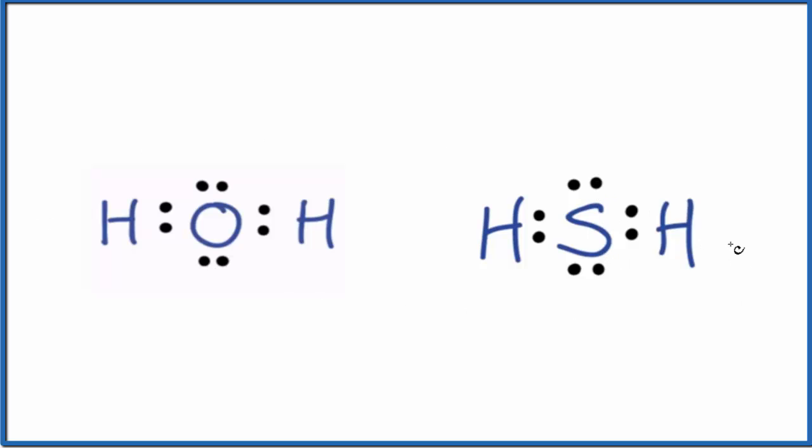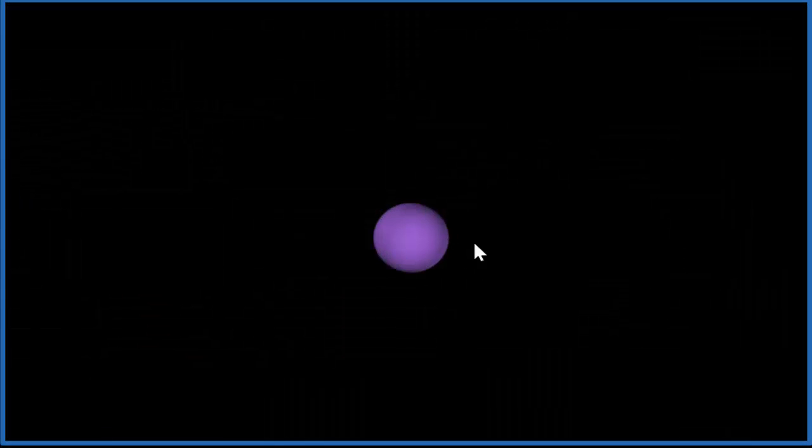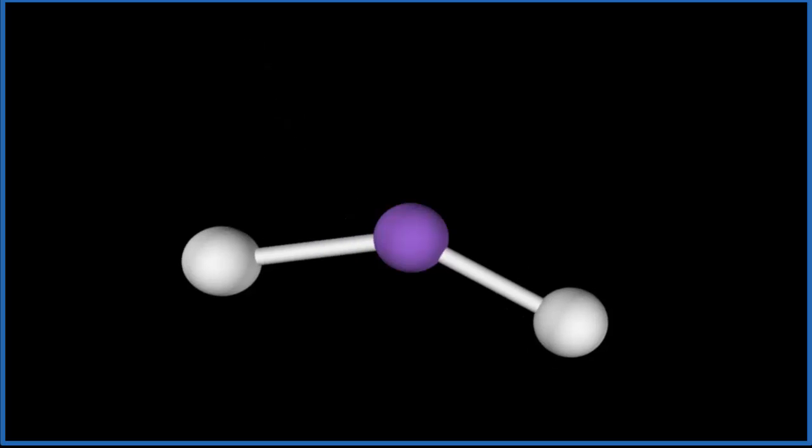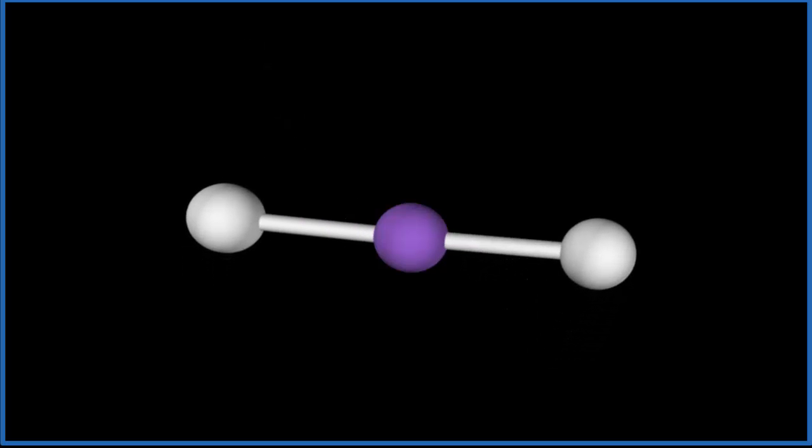So we have the same Lewis structure, that means we'll have the same molecular geometry. Let's take a look at that for a second. So you can imagine that this purple here, this would be the sulfur or the oxygen atom, either way since it's the same structure. So we have two hydrogen atoms attached to our central atom. One, two, they spread out, push away as far as they can from each other.